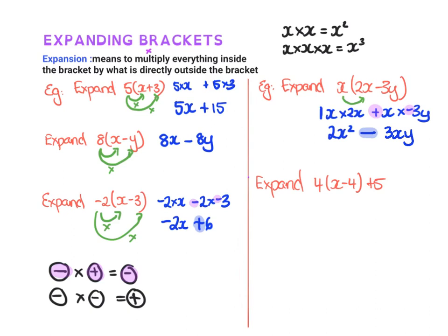All right, so then let's have a look at this one. When they say expand, so with this one, you only ever have to expand what's directly next to the bracket. So this 4 has to multiply with that x and that negative 4. This plus 5 is a separate bit. So you just do that separately.